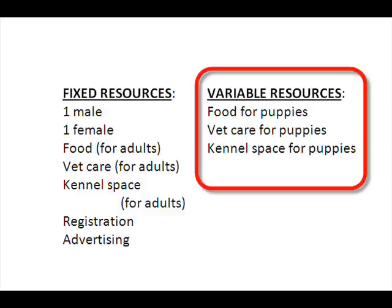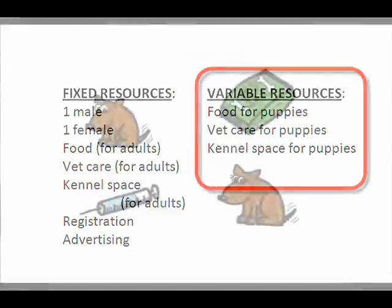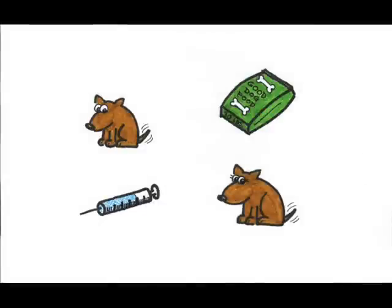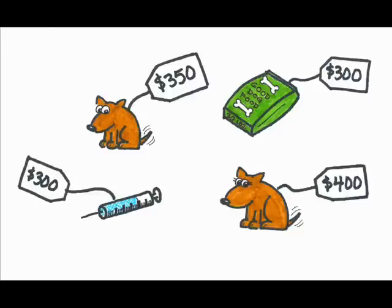For the moment, let me just attach some costs to the fixed resources. When I bought my first dogs, many years ago, the male was $350 and the female was $400. This is the dog world's version of gender bias — demand for females is typically higher, so the price is higher. Food for the adults for a year is about $300.